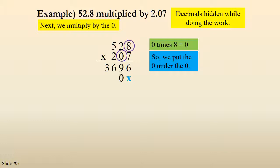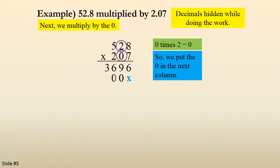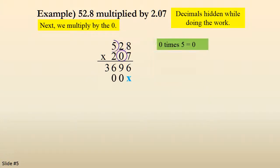0 times 8 is 0 so I put a 0. 0 times 2 is 0 so I put a 0. 0 times 5 is 0 so I put a 0. That was an easy row. Okay, now you move over to the 2.